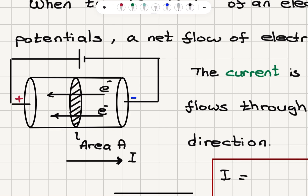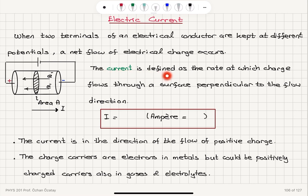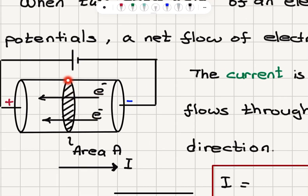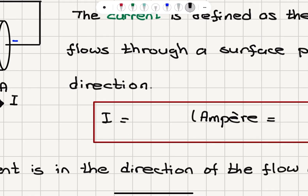We have to be careful with the definition of current. Current and electron flow are in opposite directions. Current is defined as the rate at which charge flows through a surface perpendicular to the flow direction. If this is a cylindrical conductor, that perpendicular surface is basically a circle.